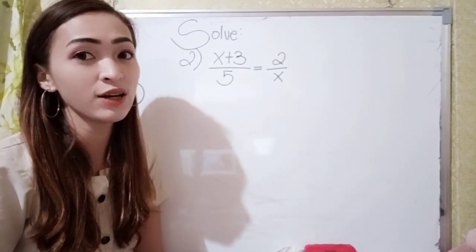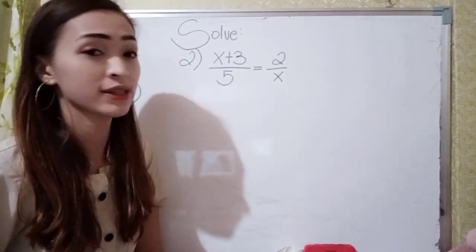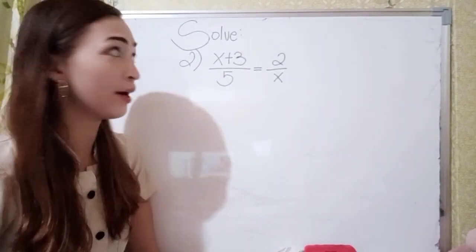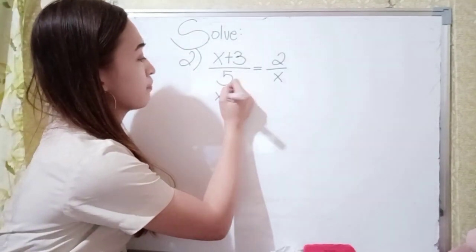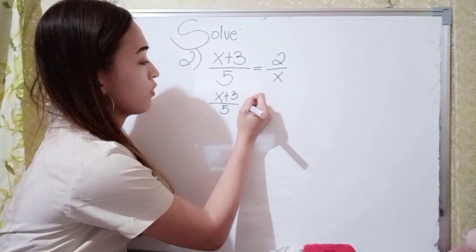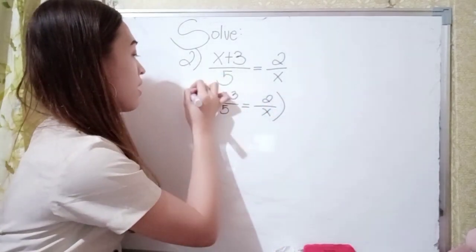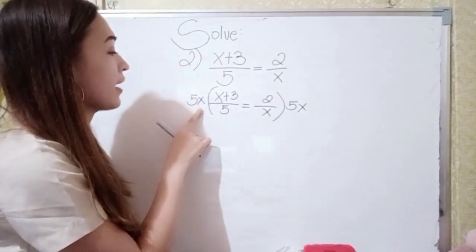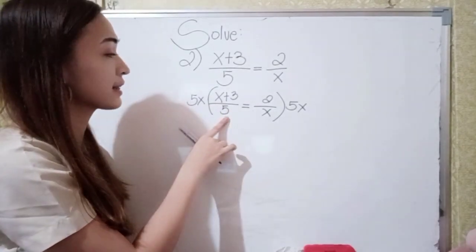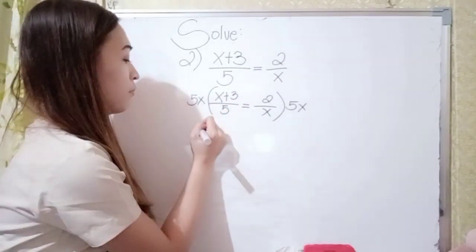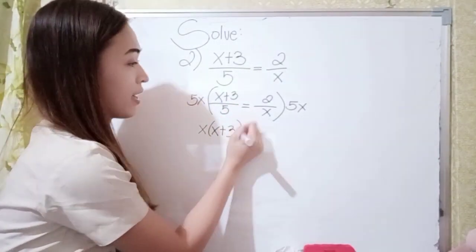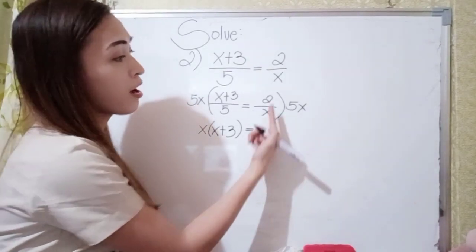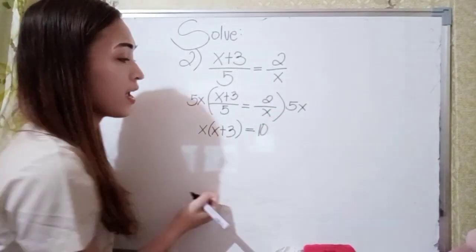For number 2, we have x plus 3 over 5 equals 2 over x. Again, we need to remove the denominator, so let's multiply both sides by 5x. It becomes x plus 3 over 5 equals 2 over x, times 5x. So 5x divided by 5 is x, then x times x plus 3 equals 5x divided by x, which is 5. And 5 times 2 is 10.